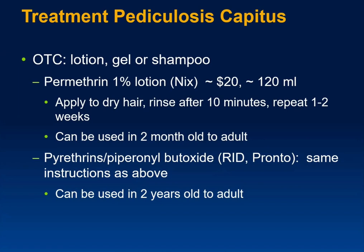Over-the-counter options include 1% permethrin lotion (brand name Nix) — apply to hair, leave on for 10 minutes, rinse, and repeat in one to two weeks; it can be used from 2 months of age through adulthood. Another option is pyrethrin plus piperonyl butoxide, available as RID or Pronto, with the same instructions, for individuals aged 2 years and older.